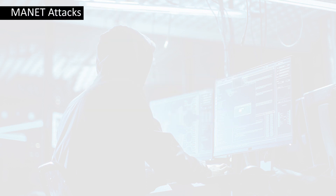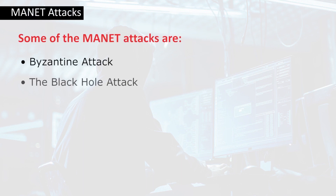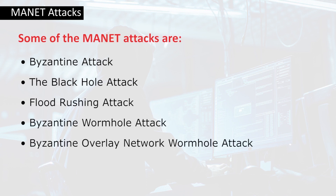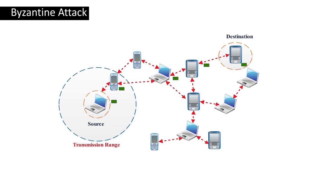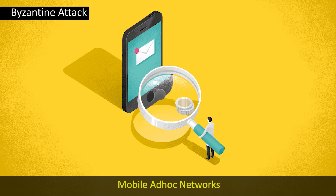The MANET — mobile ad hoc network — attacks include: Byzantine attack, black hole attack, flood rushing attack, Byzantine wormhole attack, and Byzantine overlay network wormhole attack. These are all attacks on wireless networks. The Byzantine attack exclusively targets mobile ad hoc networks. It takes place by compromising device authentication through a data leakage, causing the authenticated device to become indistinguishable from a hostile user.